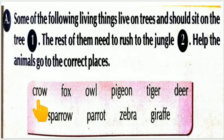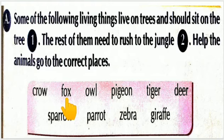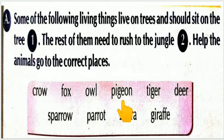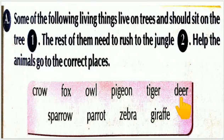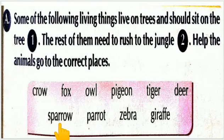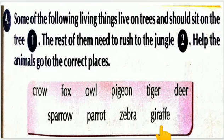Toh chalte hain bachcho — trees pe kaun rehta hai? Birds, aur zameen pe animals. Tree pe birds rehte hain aur zameen pe animals. Toh let's see: crow yani kauwa, fox yani lomdi, owl yani ullu, pigeon yani kabootar, tiger yani baagh, deer yani hiran, sparrow yani guriya, parrot yani tota, zebra aur giraffe. In sab mein se birds aur animals ke naam ko alag karna hai.